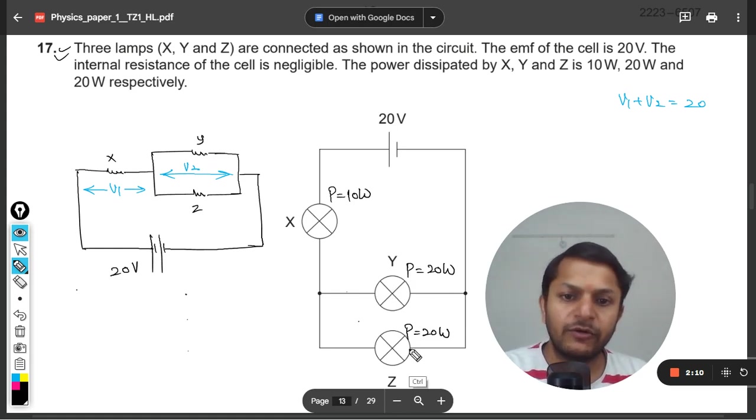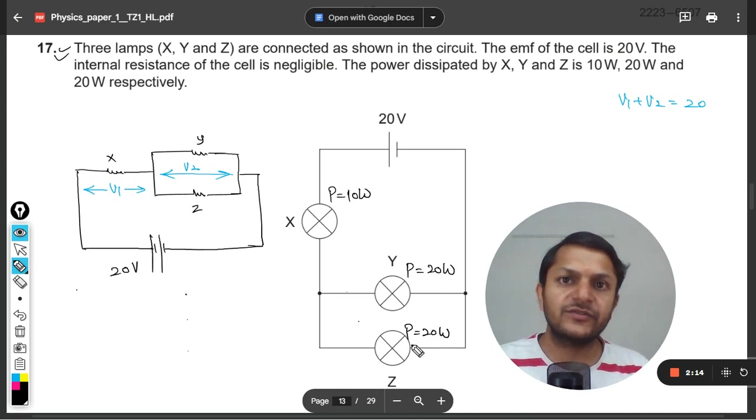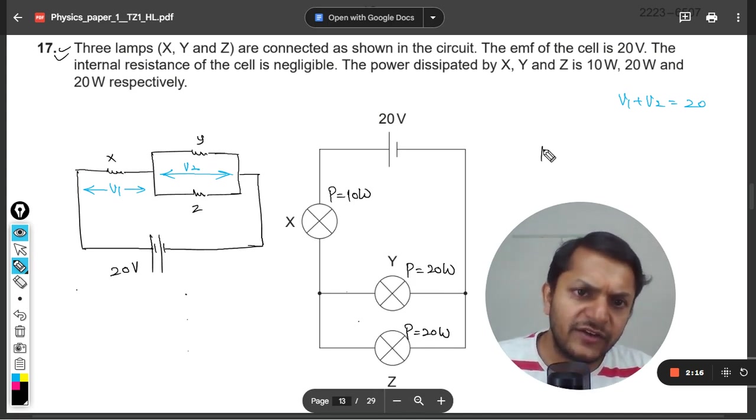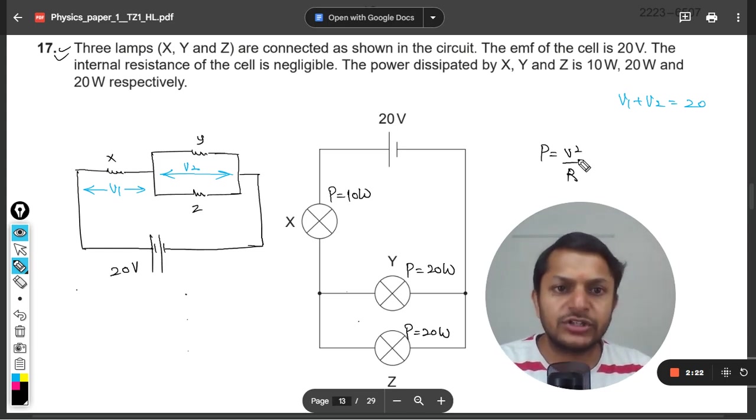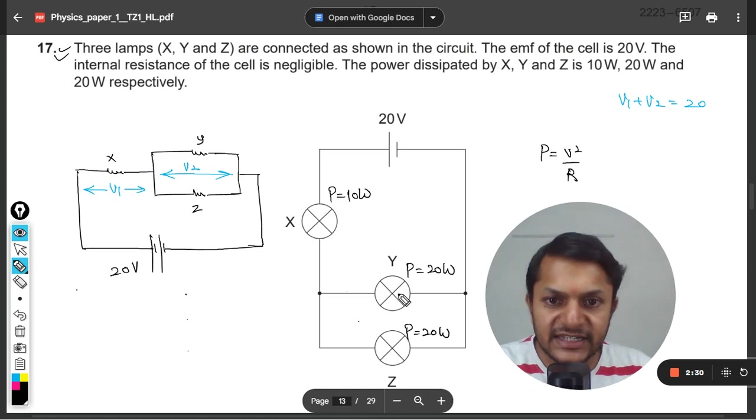But one thing is, we can also judge from this: the power here is 20 watts and power here is also 20 watts, and obviously they are in parallel so the voltage difference will also be the same. There is a formula for power which is V²/R. So if the voltage is the same across these two resistances, Y and Z, and the power is also the same, it means that resistance should also be the same. So the resistance of this and the resistance of this will be the same.